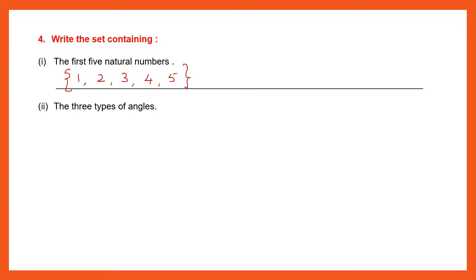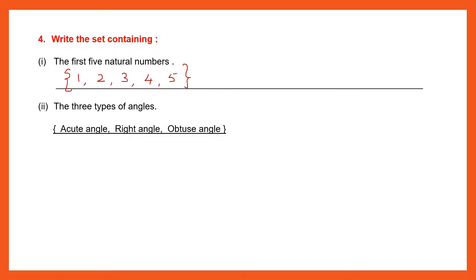Question 2: The three types of angles. The three types are: angles less than 90 degrees — acute angle; angle equal to 90 degrees — right angle; angle more than 90 degrees — obtuse angle. So this set is {acute angle, right angle, obtuse angle}.